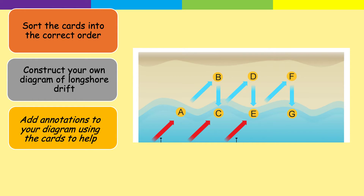Now what you're going to do is draw this diagram into your book or on paper. Once drawn, add the annotations — all those numbered steps you've just written out — by placing the number next to where you think that step belongs on the diagram. It'll probably take you about ten minutes, maybe a little longer. Pause the video and come back once you've done it.